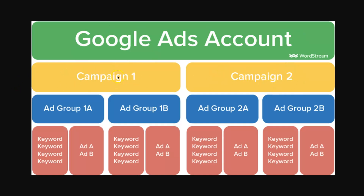Underneath each campaign you'll have at least one ad group, but it's best to have multiple ad groups. What an ad group allows you to do is bundle together different keywords with different ads so that things can be highly congruent.